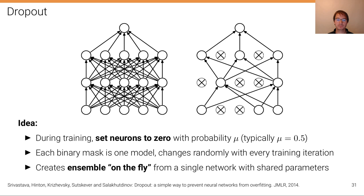And this mask changes randomly with every iteration during training. Every iteration during training we are randomly drawing with probability 0.5 if a neuron is active or if it is removed.